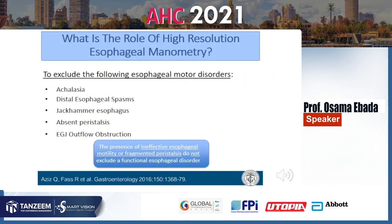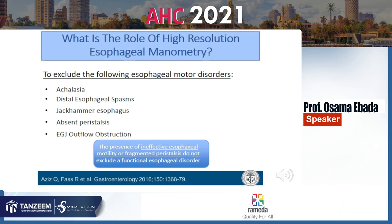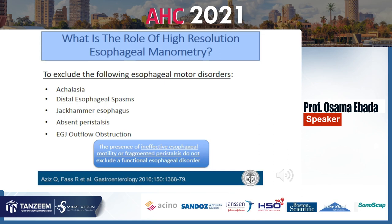High resolution manometry is used to exclude major esophageal motor disorders like achalasia, distal esophageal spasm, jackhammer esophagus, absent peristalsis, and esophagogastric junction obstruction. However, the presence of ineffective esophageal motility or fragmented peristalsis does not exclude a functional esophageal disorder.